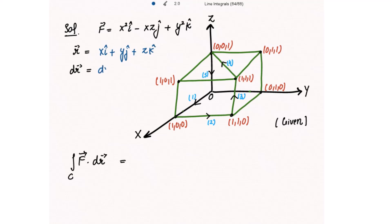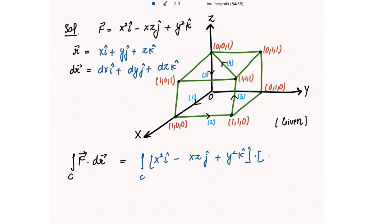dr vector becomes dxi cap plus dyj cap plus dzk cap. Taking the line integral along the closed path, the dot product of F vector with dr vector is: x squared i cap minus xz j cap plus y squared k cap, dotted with dxi cap plus dyj cap plus dzk cap. The dot product gives x squared dx minus xz dy plus y squared dz.